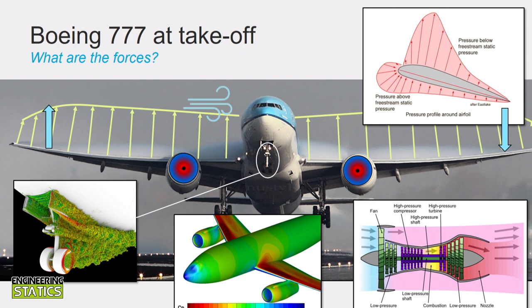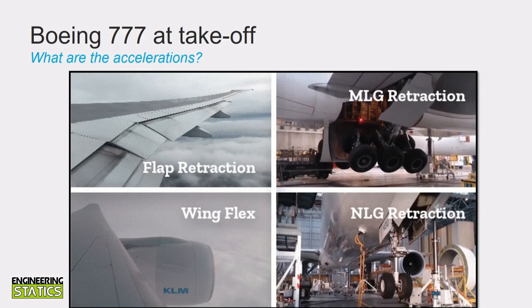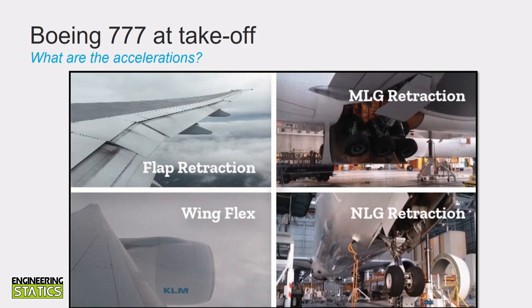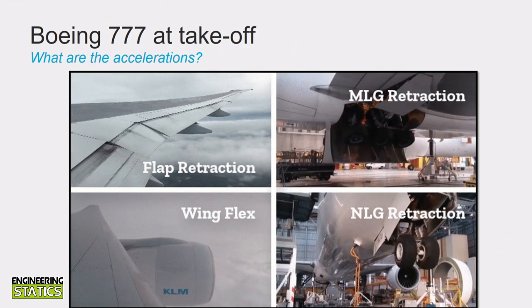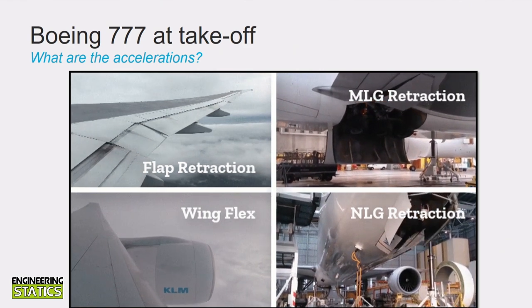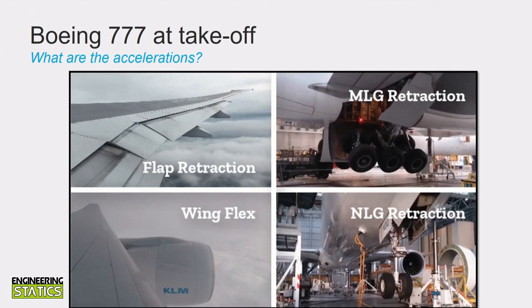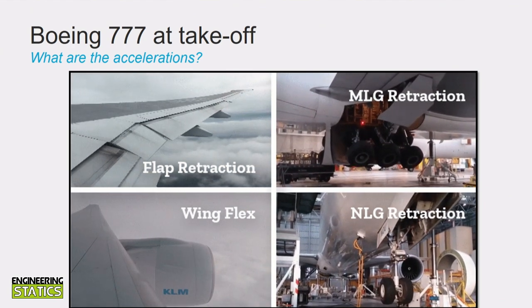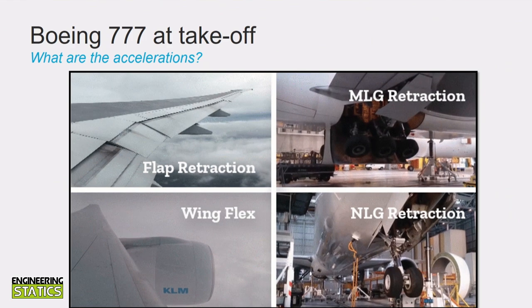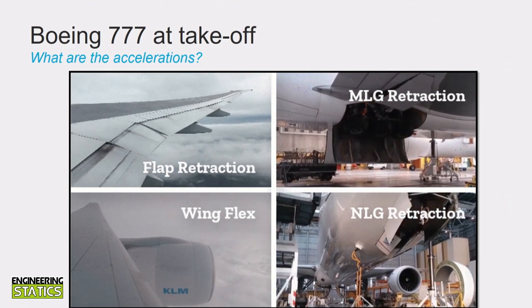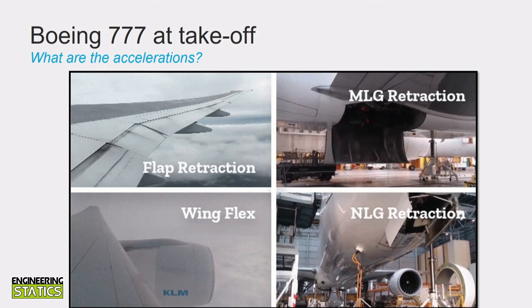But that is only one side of the equation. We also have to think about the accelerations. In addition to the overall acceleration of the aircraft, there are local accelerations occurring as well. The wings flex causing different accelerations along the wing, and the flaps and landing gear will begin to retract to reduce drag. As these states of motion continuously change, all of the forces we previously mentioned will also be changing, making the state of motion quite complex to analyze.